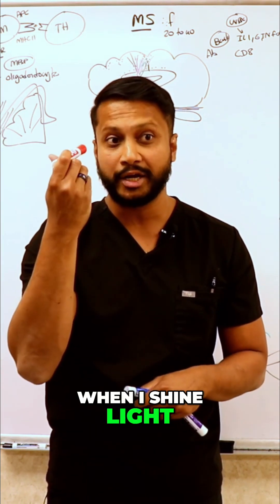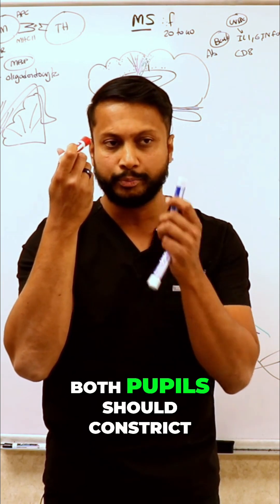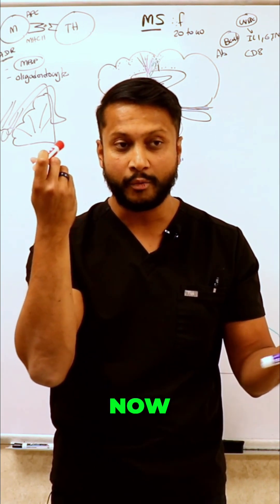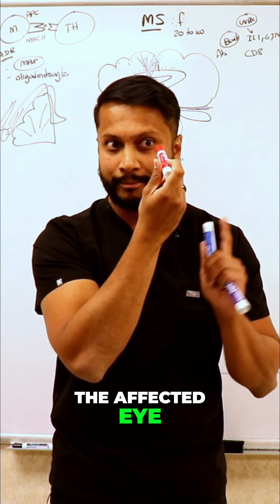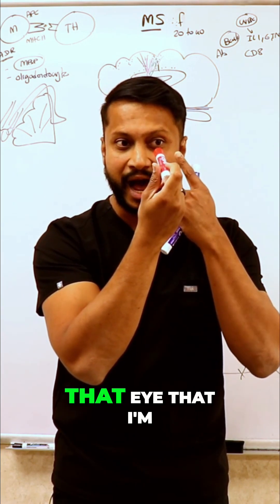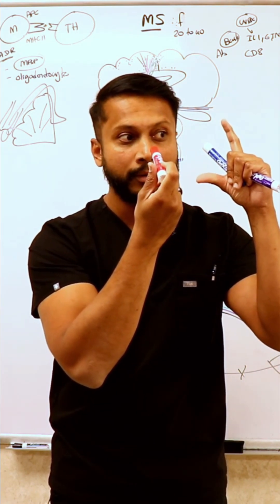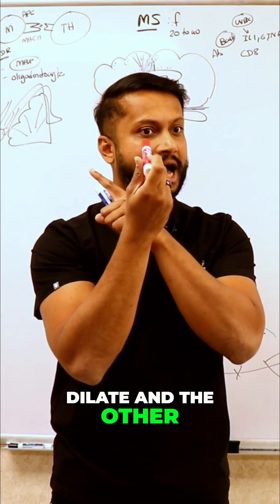When I shine light into the unaffected eye, both pupils should constrict. Now when I go to the affected eye, paradoxically what should happen is that eye that I'm shining light into should dilate, and the other eye will also dilate to a certain extent.